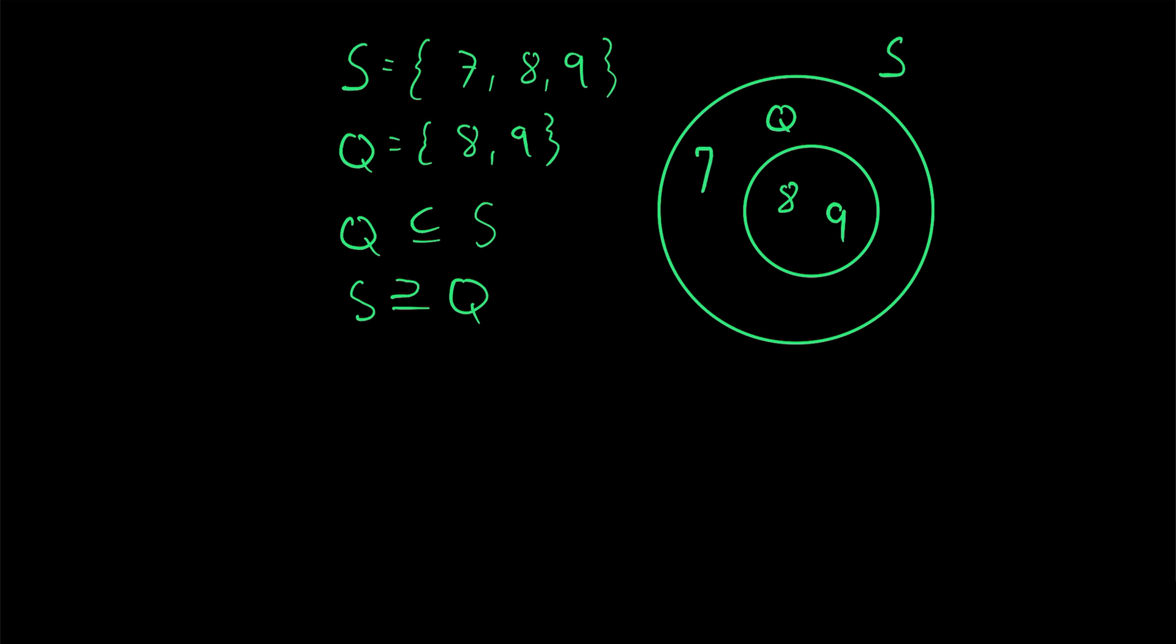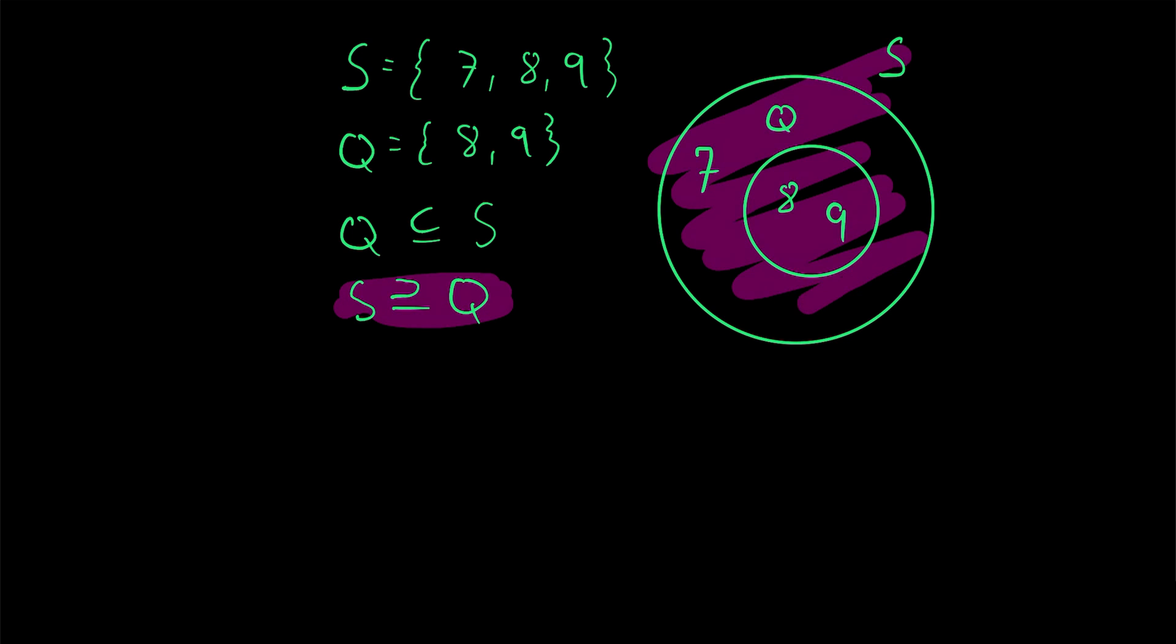And then the element 7, that's in S, but it's not in Q. So Q is a subset of S. All of its elements belong to S. Equivalently, S is a superset of Q. It contains every element of Q.